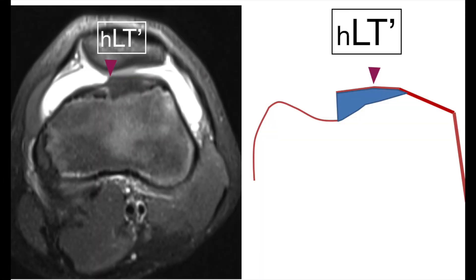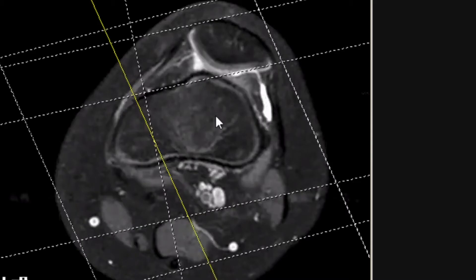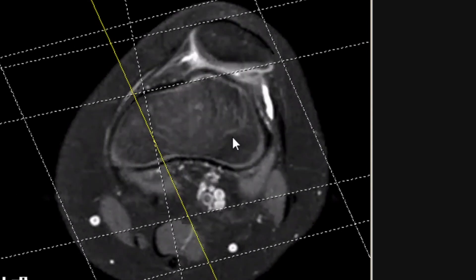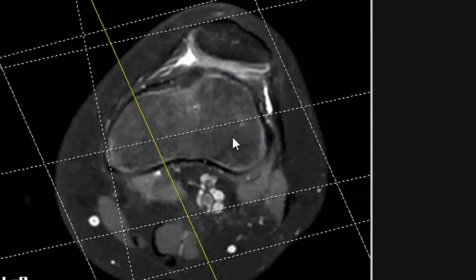In dysplastic trochlea, the lateral trochlea is flattened, and in the more severe cases, the highest point of the trochlea is medial to the lateral trochlea. In this case of severe trochlea dysplasia, we can appreciate how the highest point of the trochlea is localized medial to the most lateral aspect of the trochlea.